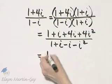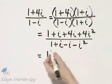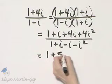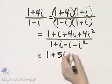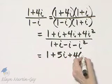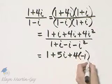Now let's simplify. I have 1, I plus 4I, that's 5I. And then plus 4I squared is negative 1. Don't forget that.